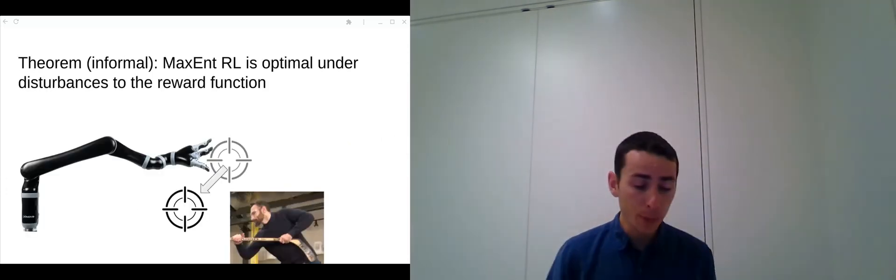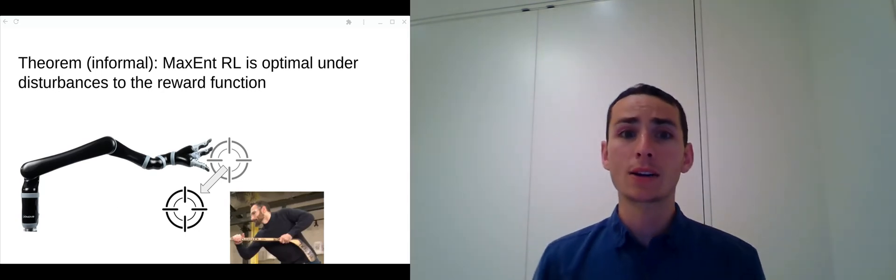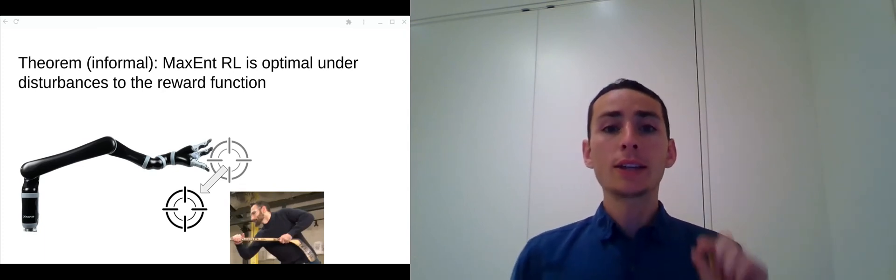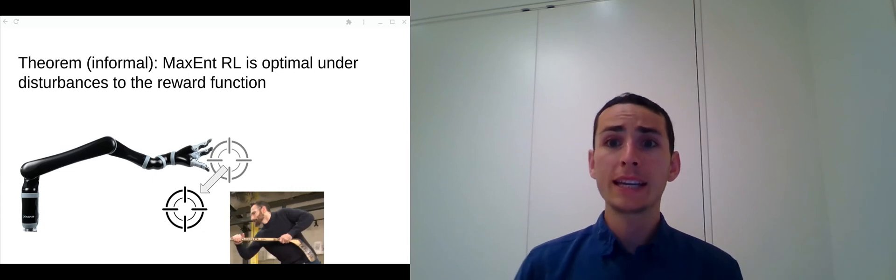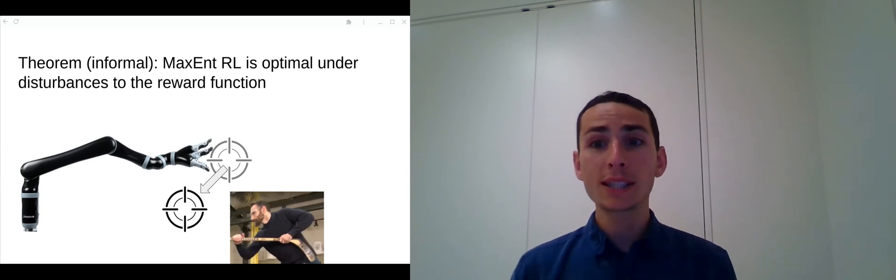So we're going to look at three formal results from our paper. The first result says that MaxEnt RL—that is, acting randomly—is optimal and ensures you are robust against perturbations to the reward function. Even if the reward function is perturbed slightly by an adversary, the policy produced by MaxEnt RL will still receive high reward.